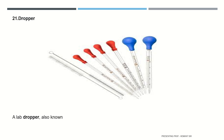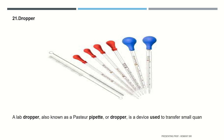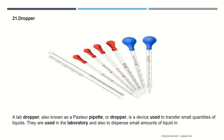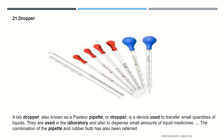A lab dropper, also known as a pasteur pipette or dropper, is a device used to transfer small quantities of liquids. They are used in the laboratory and also to dispense small amounts of liquid medicines. The combination of the pipette and rubber bulb is also referred to as a teat pipette.